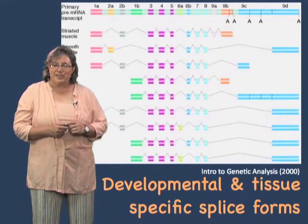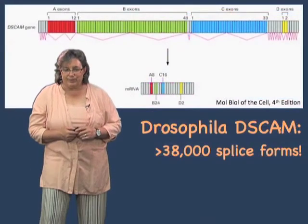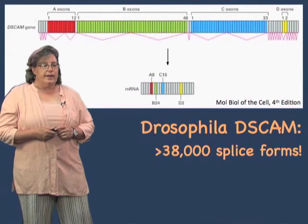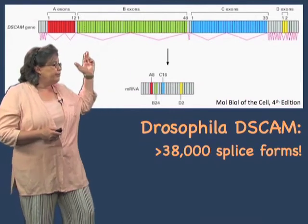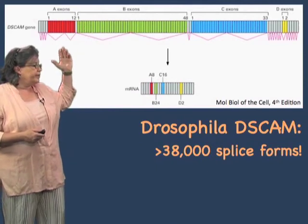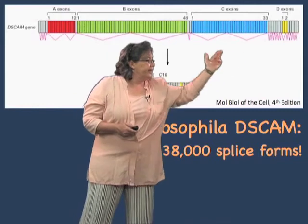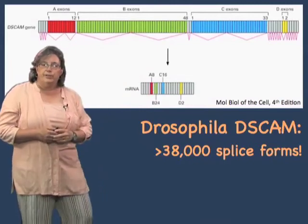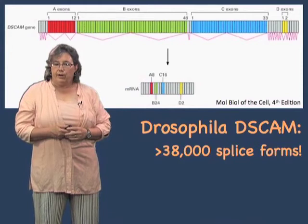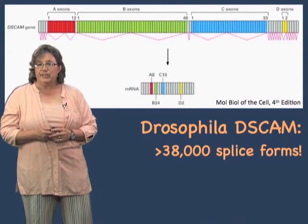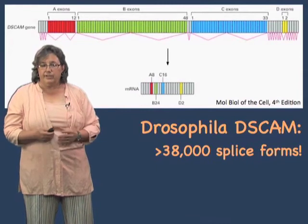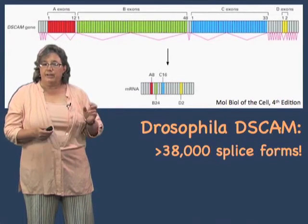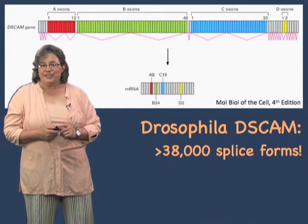Just how complex can it get? Here's the current record holder: the Drosophila dscam gene, which is involved in axonal guidance in the brain. Dscam has four regions of mutually exclusive exons — one region has 48 options, another has 33, another has 2, and another has 12. If you do the math, there are over 38,000 different possible spliced isoforms of the dscam gene, and to the best of our knowledge all of these isoforms can be made. So this one gene in Drosophila can make three times as many different proteins as there are genes in the entire Drosophila genome.